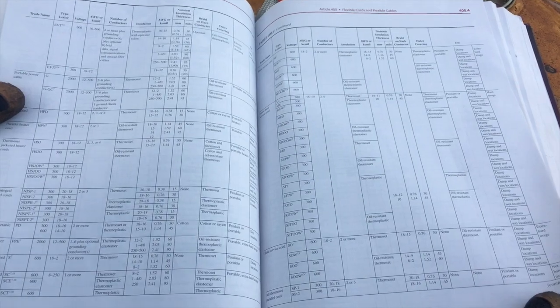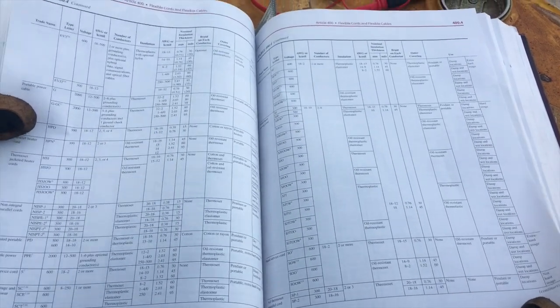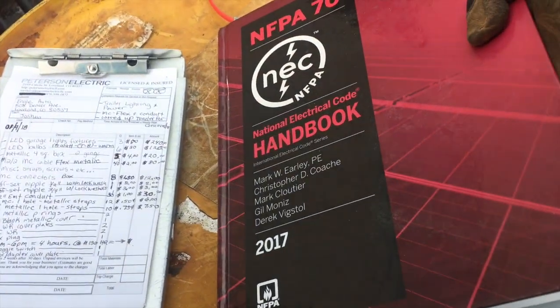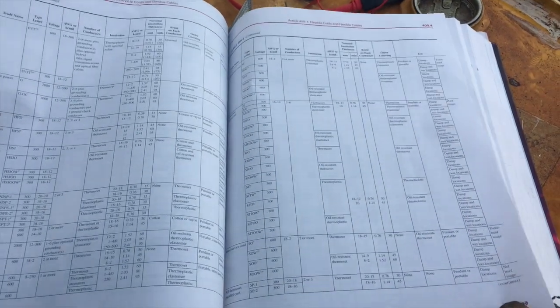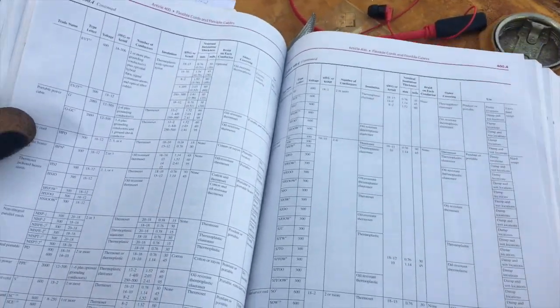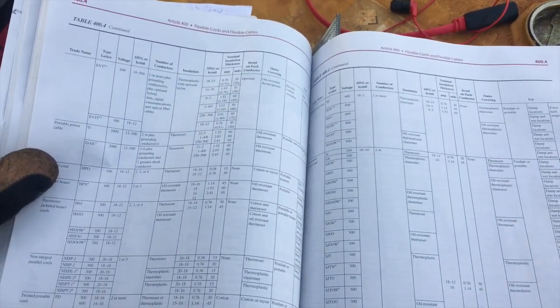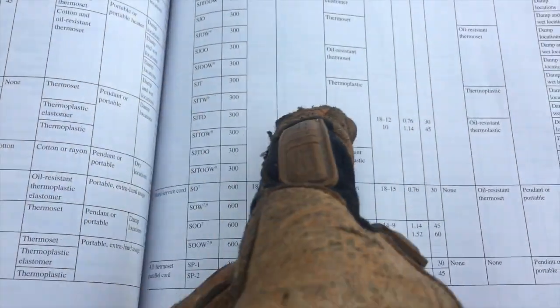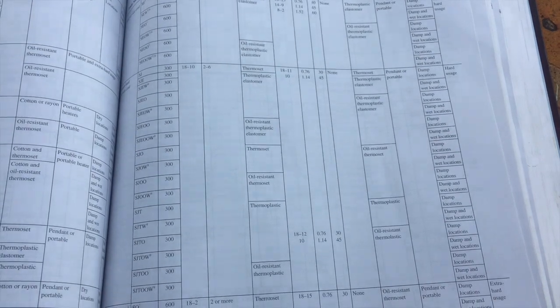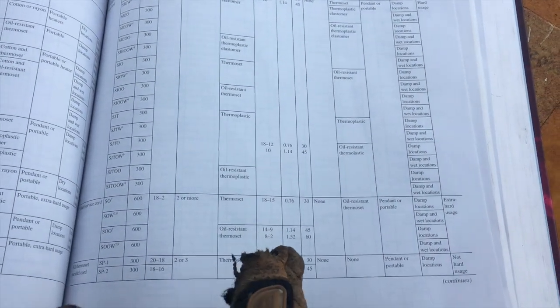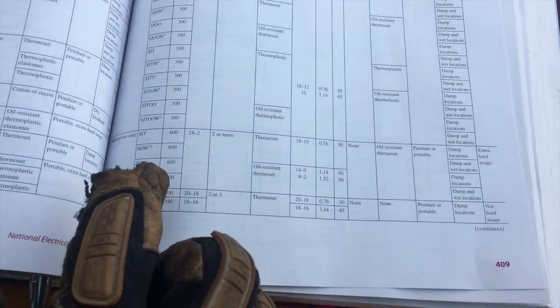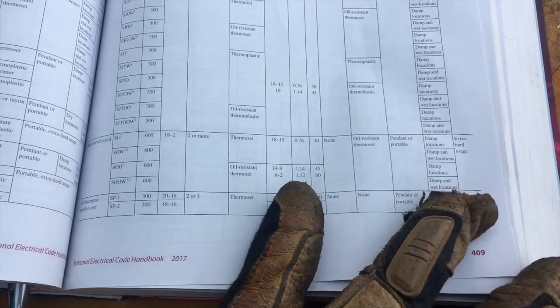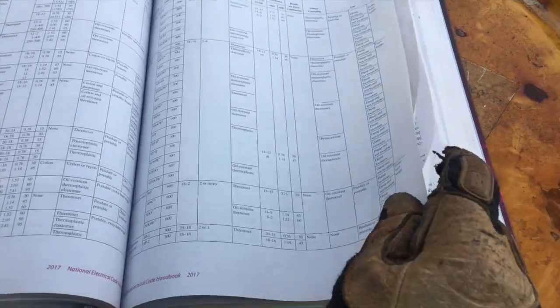You're also going to turn to, in here it's going to be, I've got a handbook by the way 2017, so that's page 409, but a JSOOW cord is going to state in here what it's rated for, if it's going to be oil, thermally rated, also wet, dry, damp, extra hard duty, things of that nature.